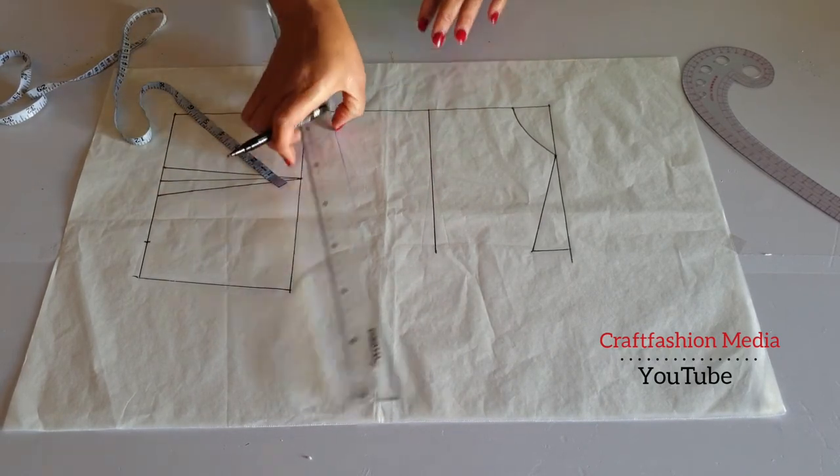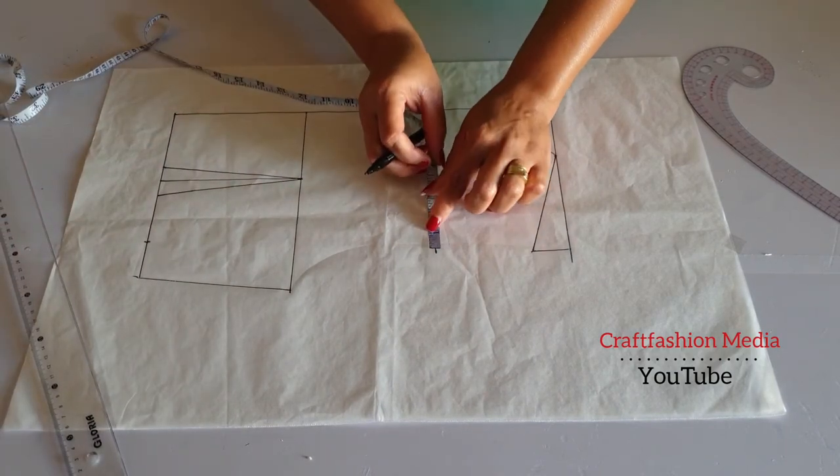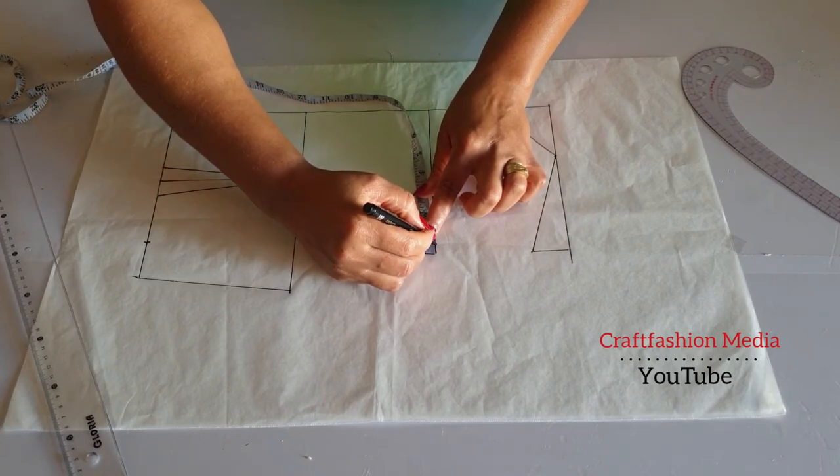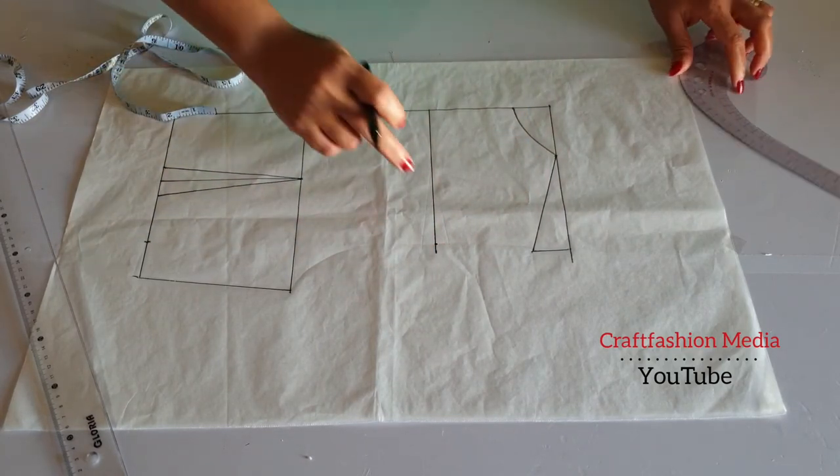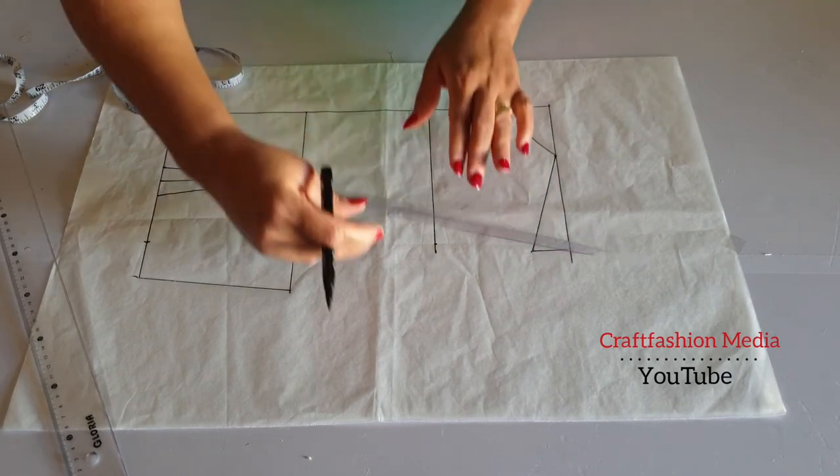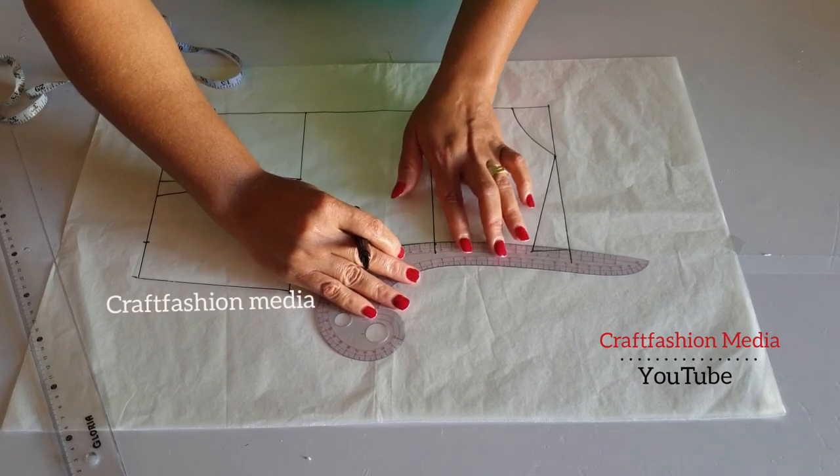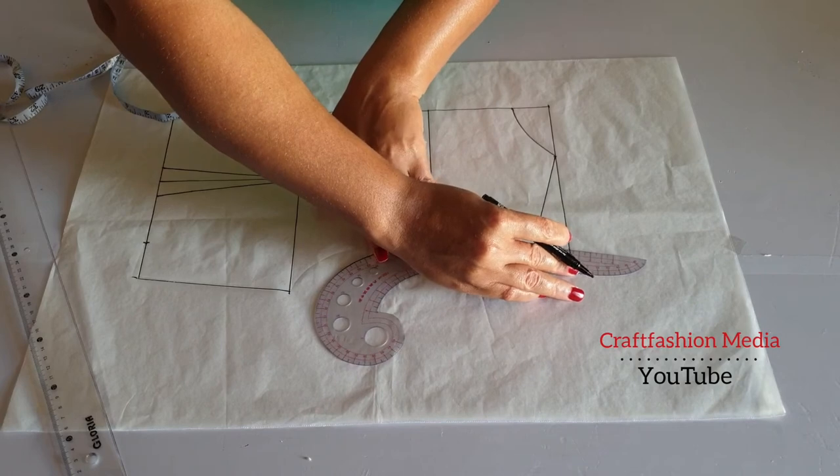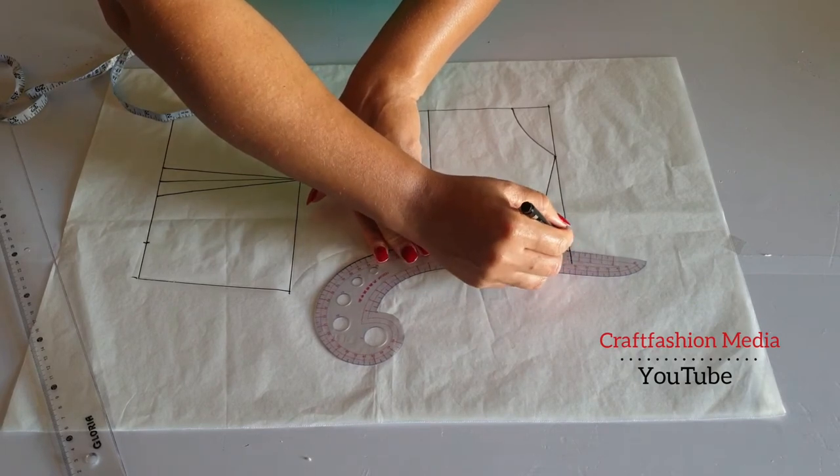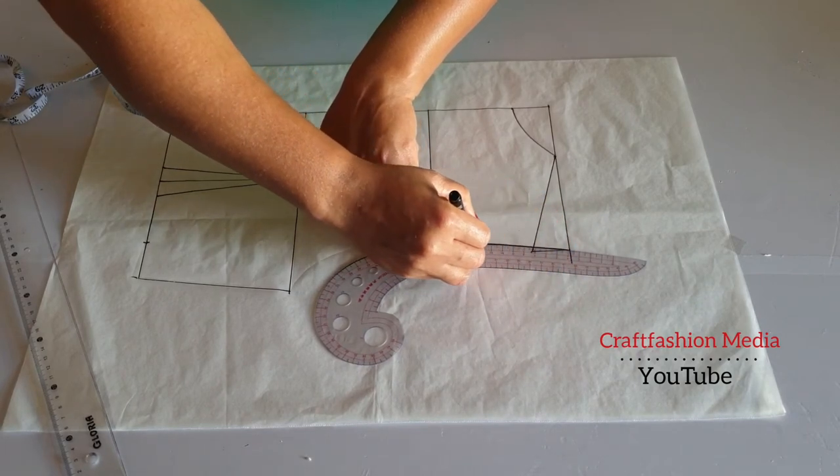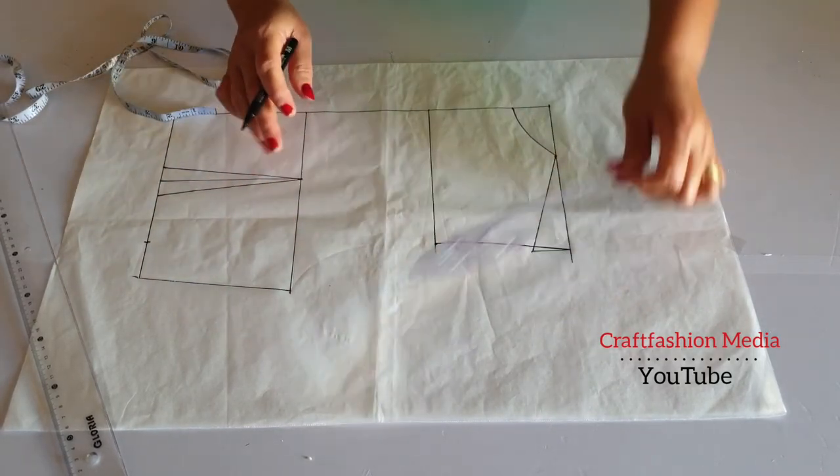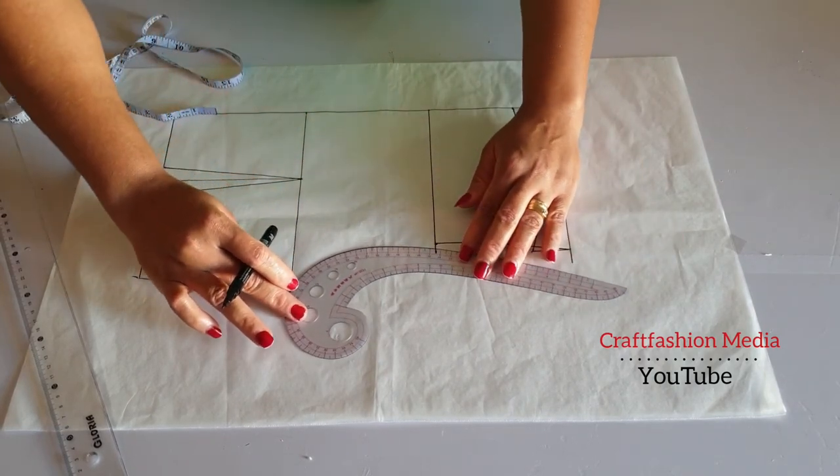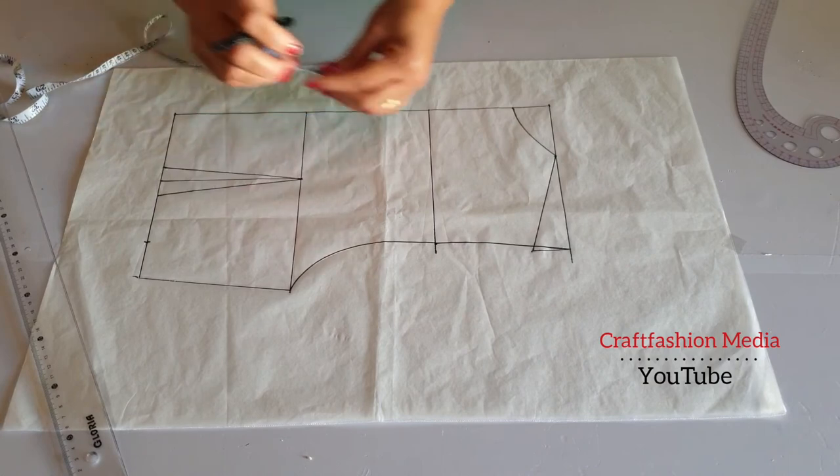On this same line, I'm going to subtract half an inch. And I will extend the armhole downward as you can see. Now I am going to measure my armhole.